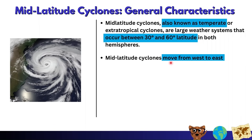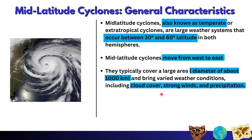Mid-latitude cyclones move from west to east, known as an easterly direction. If asked in which direction they move, your answer should be from west to east. They typically cover a large area — a diameter of about 1,000 kilometers — and bring varied weather conditions including cloud cover, strong winds, and precipitation.